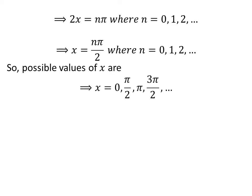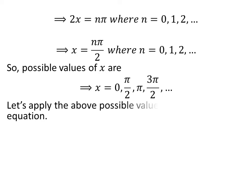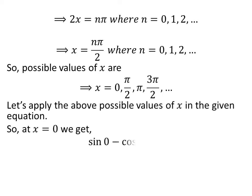So the possible values of x are 0, half of pi, pi, 3 times half of pi, and so on. Let us apply these possible values of x in our given equation: sin of x minus cosine of x is equal to 1.